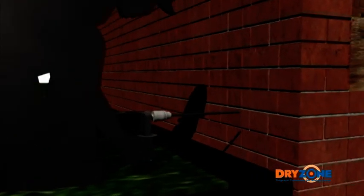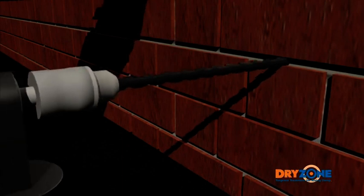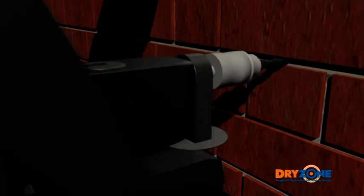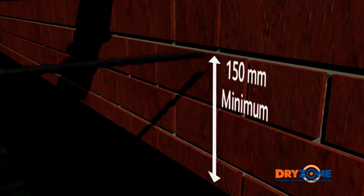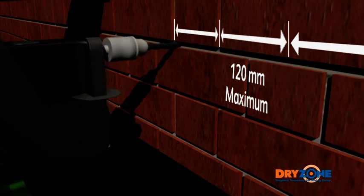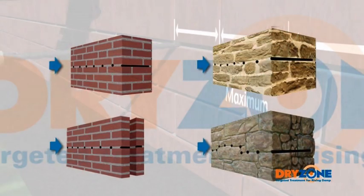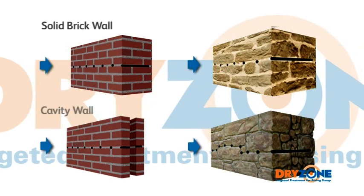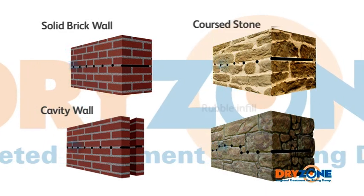12 millimetre diameter holes are then drilled at regular intervals through a level mortar bed, at least 150 millimetres above the external ground level. The depth and positioning of these holes will be determined by the type of wall structure, though in general they should be no more than 120 millimetres apart. Almost all wall types can be drilled from one side in a single operation.